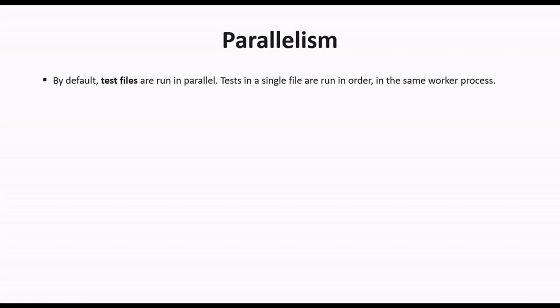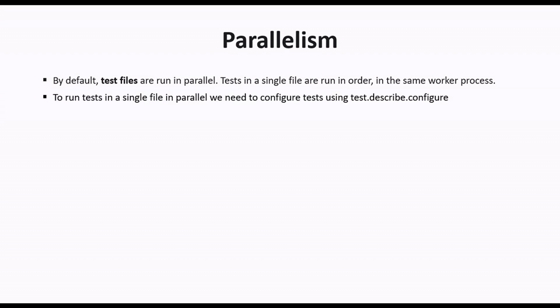By default, when we run the test files using the Playwright test command, test files are run in parallel. Tests in a single file run in order in the same worker process. To run the tests in a single file in parallel, if we have one file with multiple tests and we want to run those tests in parallel, we need to configure the test by using test.describe.configure.